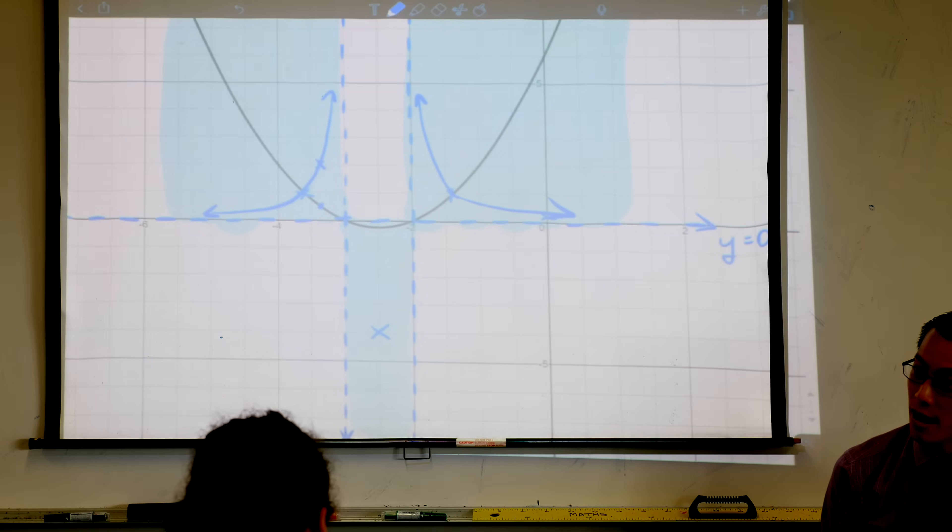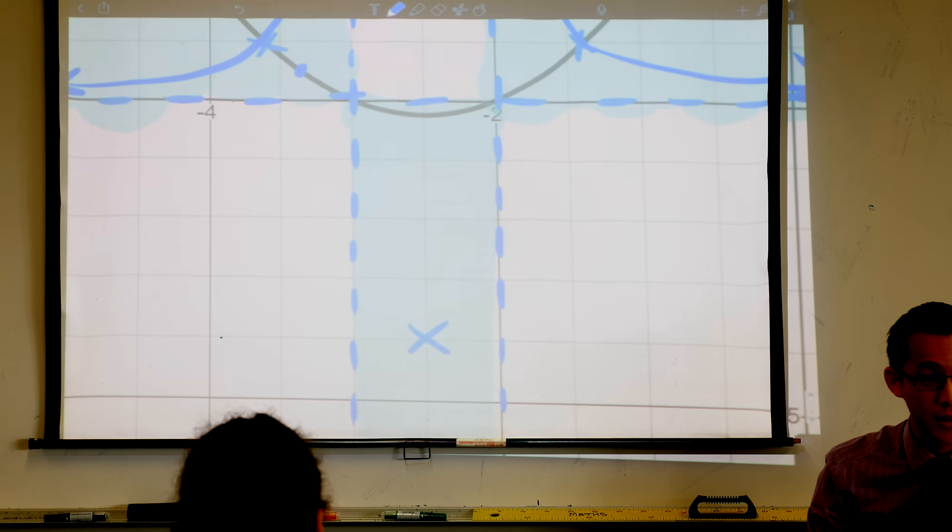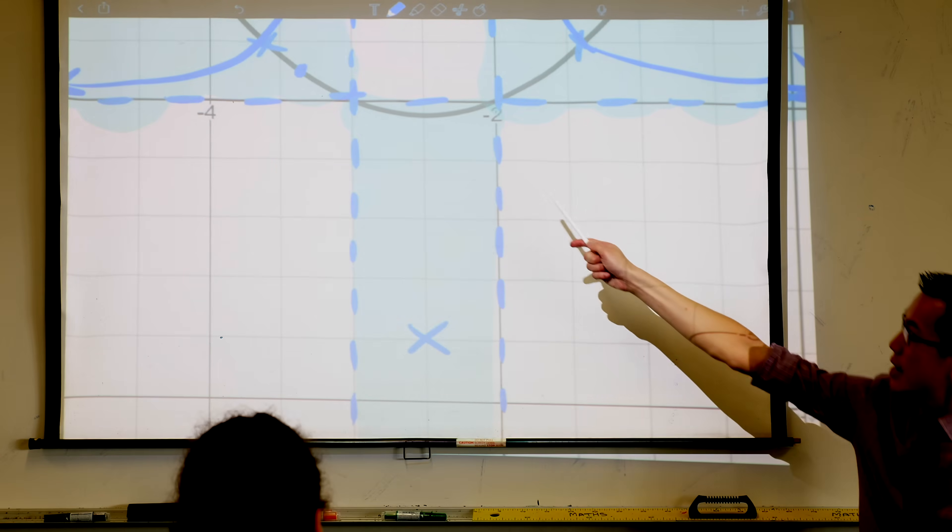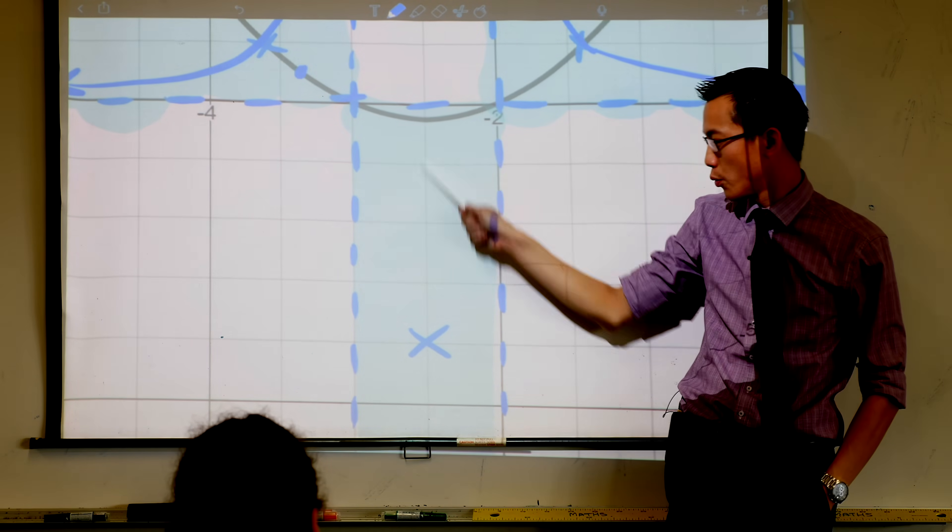The only other option is to go down, and that shouldn't surprise us because just look closely in here. I can cheat here because I've got the screen, right? See this is negative a quarter, and so we took its reciprocal, we got negative 4.